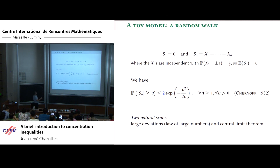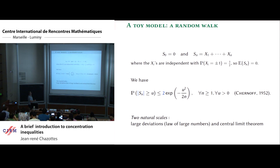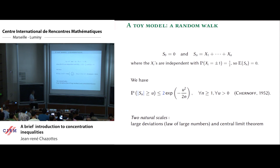If u is very large, bigger than order square root of n, this doesn't make sense because the probability will be zero. The best way to look at this inequality is at two different natural scales: the large deviation scale, which is the scale of the law of large numbers, and the central limit theorem scale.